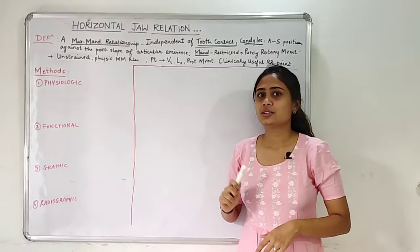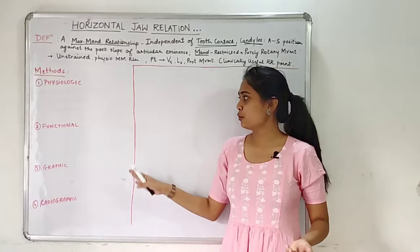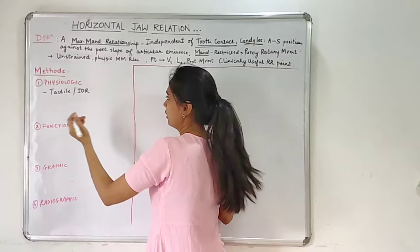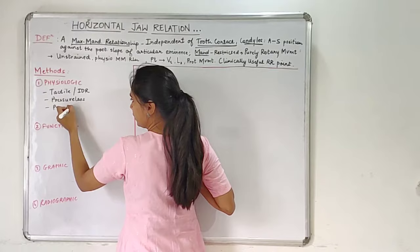Now we will go about with the methods to record the horizontal jaw relation. The methods are grossly divided into four topics: physiologic, functional, graphic, and radiographic. These four are further divided into subtopics. Physiologic includes tactile, also known as interocclusal record, then the pressureless method, which consists of the nick and notch method, and the pressure method.